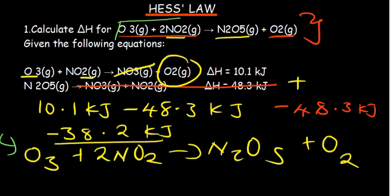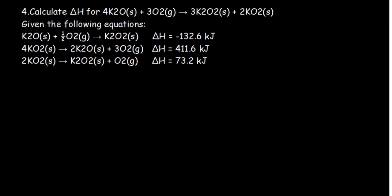This is what we call Hess's law. For question 4, we need to find the enthalpy for that reaction. We are going to apply the same principles used in our previous questions. Starting with the first reaction, let's check whatever we have against the main equation — it's on the same side, oxygen is there, and that is also matching up. So there's no necessity to reverse that reaction; we can keep it as it is.